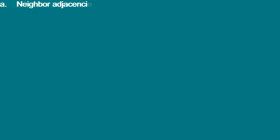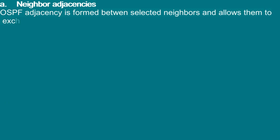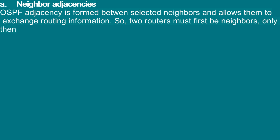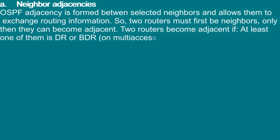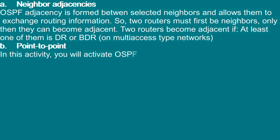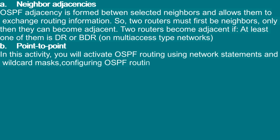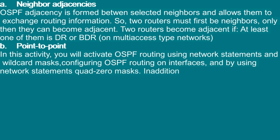A — Neighbor adjacencies: OSPF adjacency is formed when selected neighbors exchange routing information. Two routers must first be neighbors before they can become adjacent. Two routers become adjacent if at least one of them is DR or BDR on multi-access type networks, or if they are point-to-point. In this activity, you will activate OSPF routing using network statements and wildcard masks, configure OSPF routing on interfaces using network statements with quad-zero masks, and configure explicit router IDs and passive interfaces.